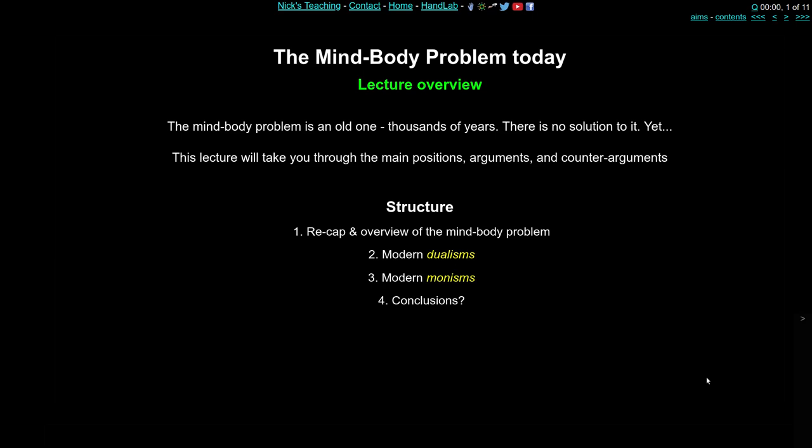Don't expect any solutions to the mind-body problem today, or maybe in the next thousand years or so. The mind-body problem is a very old one, as old as people's thinking about the mind and the brain — thousands of years old. In the second part, we're going to look at modern versions of dualism: the idea that there are two kinds of things in the universe, mind and matter. In the third part, modern versions of monism or materialism or physicalism — the idea that there's really only one sort of stuff in the universe, and it produces both mind and material. And in the last part, I'm just going to offer my own personal reflection on this whole thing.